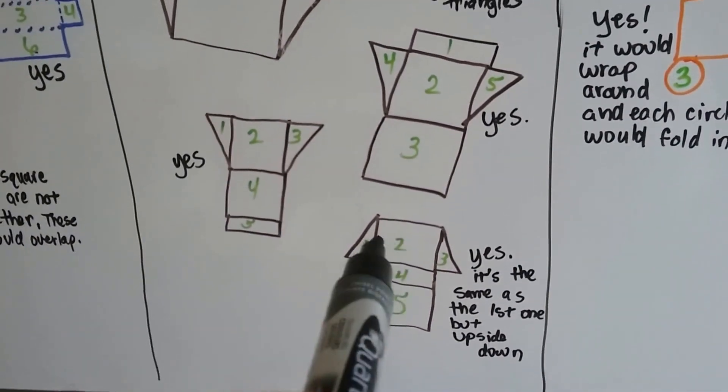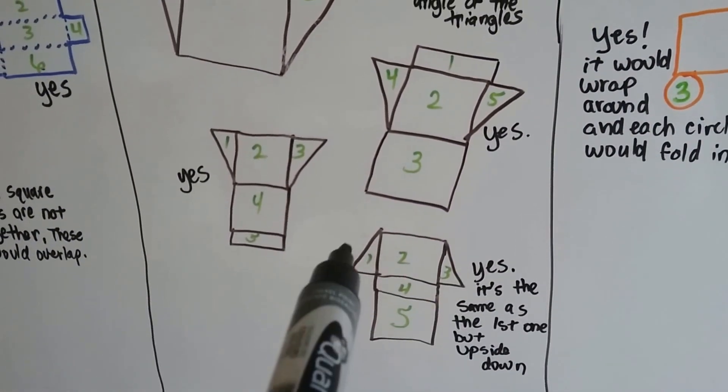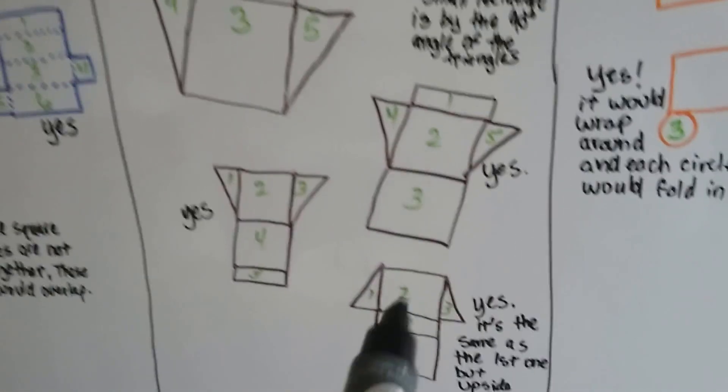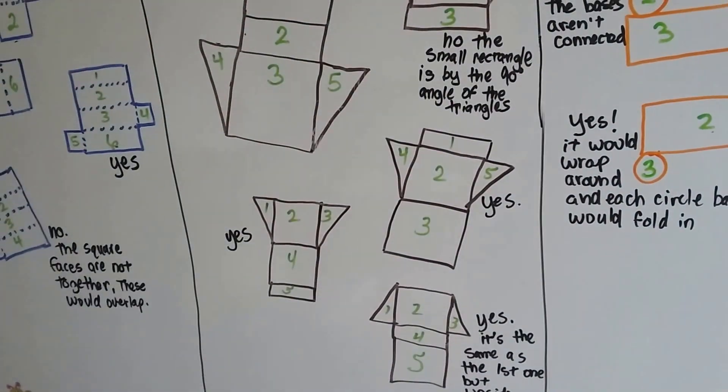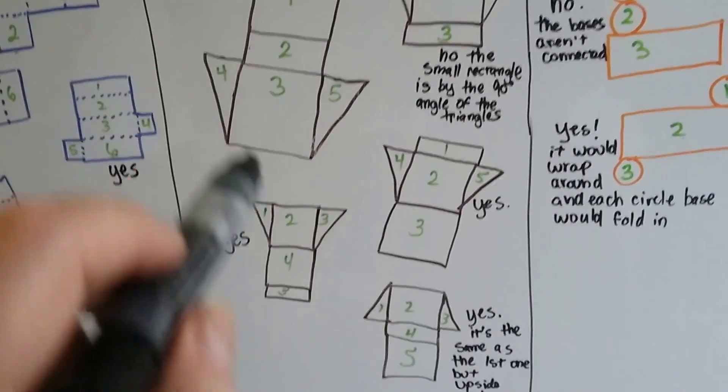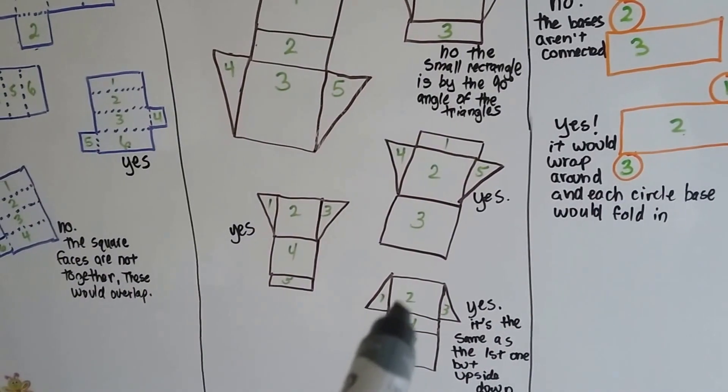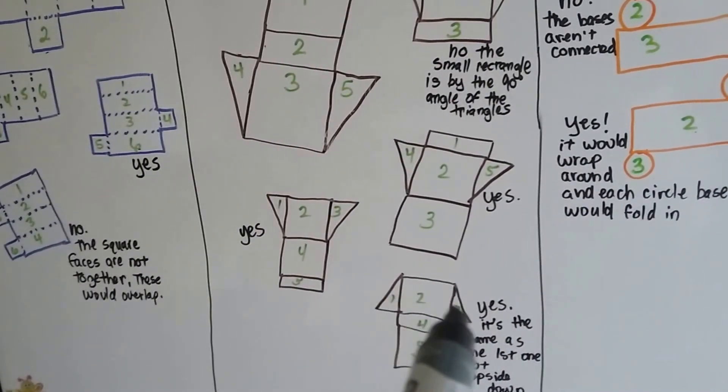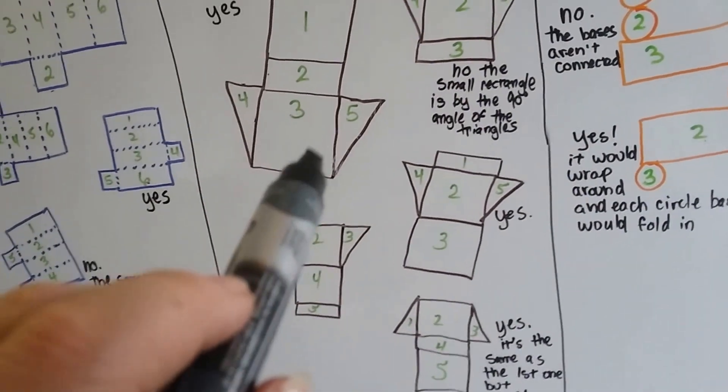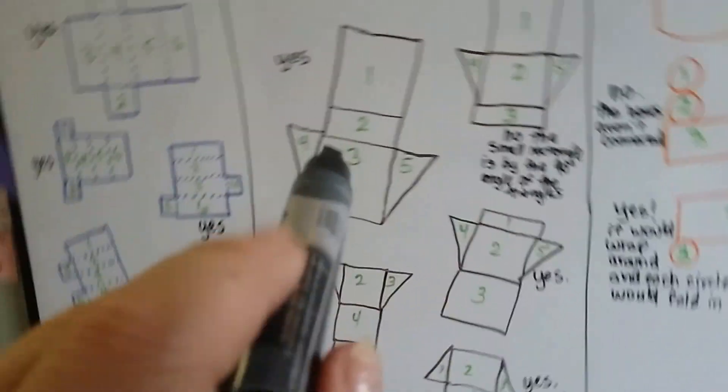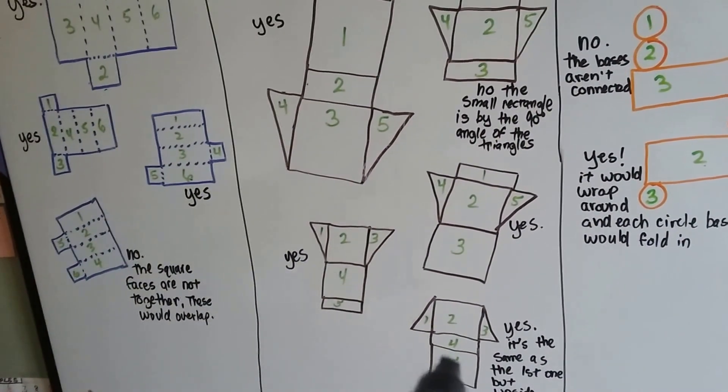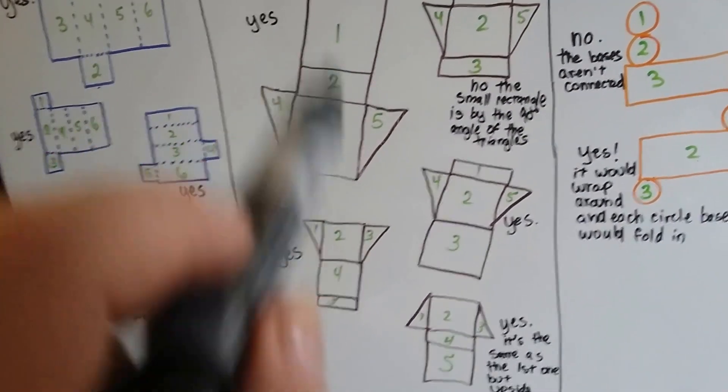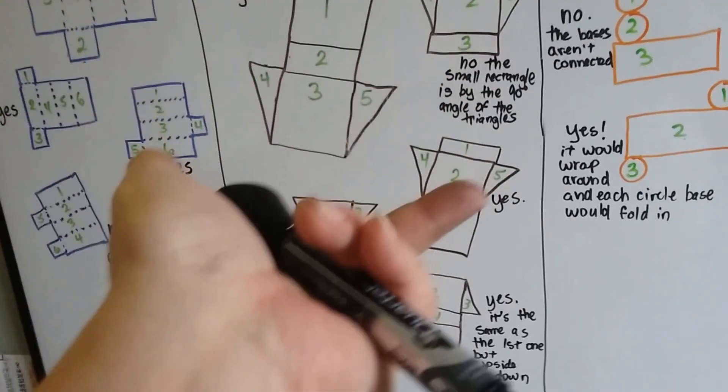How about this one? This one's got the triangles going in a different direction. Yes, this is the same thing as this one. It's just turned around. It's just pointing the other direction. It's got a big rectangle with the triangles pointing down like arrows. So does this one. If I flipped my camera around, you'd be able to see it. And then it's got the small rectangle and then another big rectangle. So it's exactly the same as this one, just turned around going the other way.